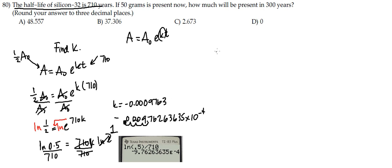Alright, so now we can go over here and write a equals a₀ e to the negative 0.0009763t. And from there we can solve.